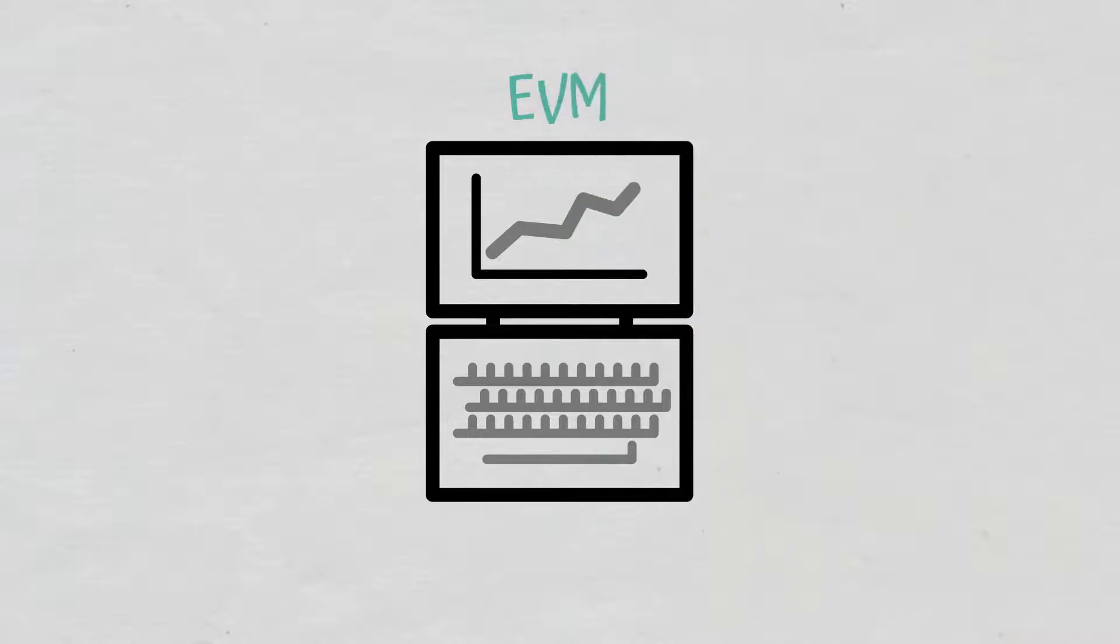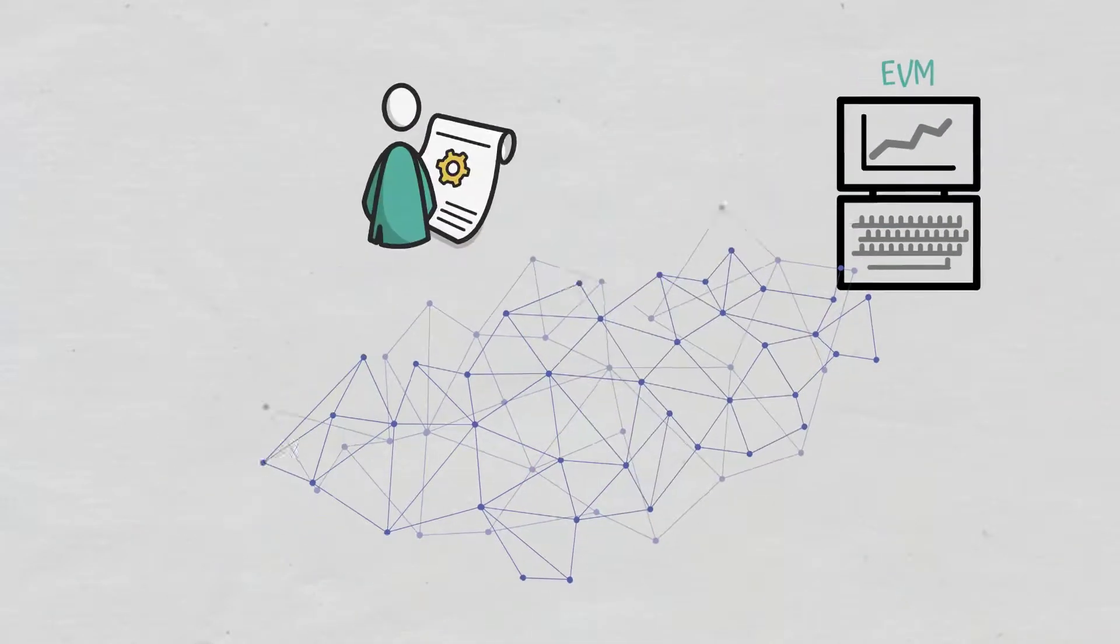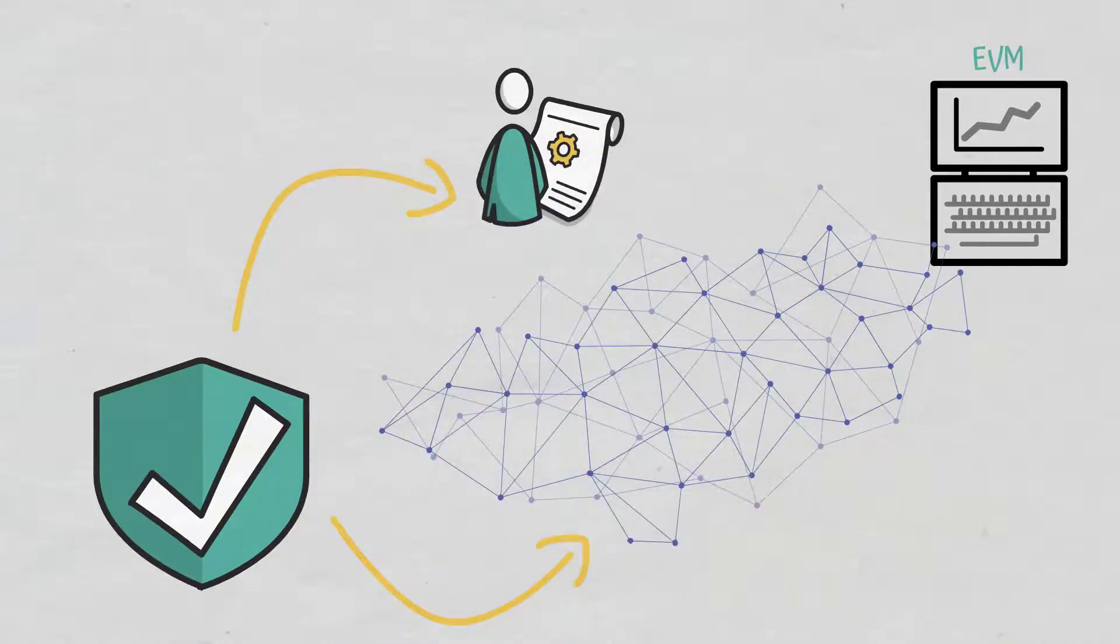These fees are used to allocate resources of the Ethereum virtual machine so that any decentralized application on the network, including smart contracts, can be self-executed both safely and in a decentralized fashion.